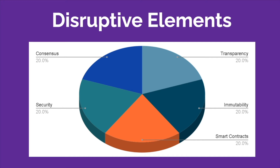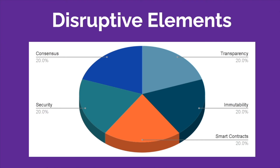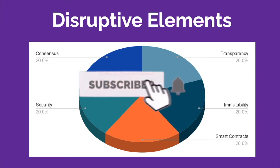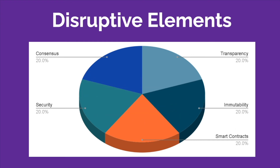An immutable history of transactions eliminates the fraud challenges faced by many businesses. The third point is security. Blockchain provides a highly secure transaction system that is almost impossible to hack — to do so, you would have to take down the entire internet at the same time, which is not possible. Every transaction recorded on a blockchain is cryptographically secured with a digital signature. In contrast to a centralized system, which is vulnerable to attack, blockchain uses a decentralized approach where transaction data is replicated across the distributed ledger.